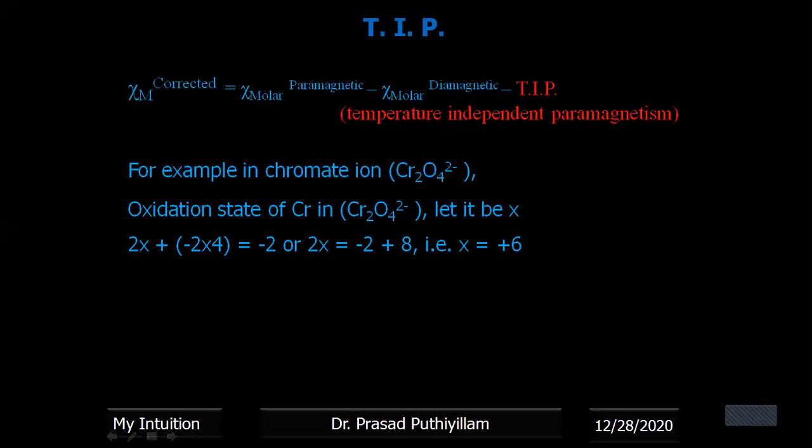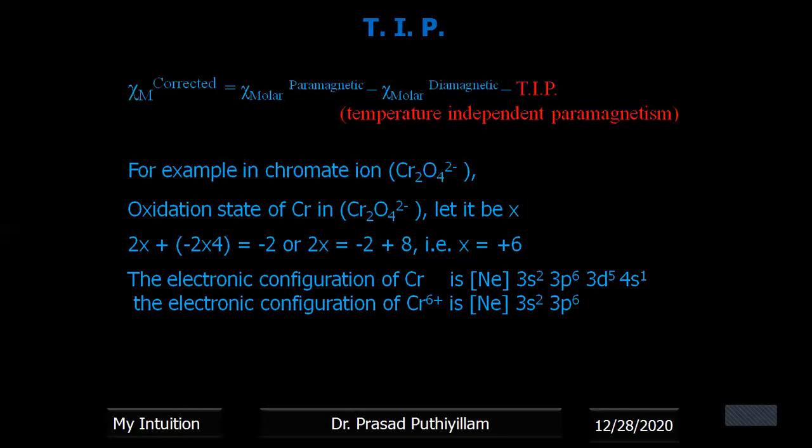So we calculate, we consider the chromium oxidation state as x, therefore 2x + (-2 × 4) = -2. That is -2 is for oxygen, and 4 times oxygen, therefore -2 × 4, that is -2, or you can say 2x = -2 + 8, or x = +6. That means here the chromium oxidation state is +6, and the electronic configuration of chromium, if you write.